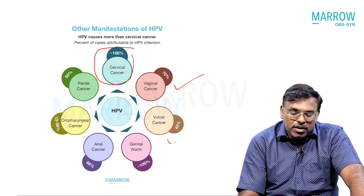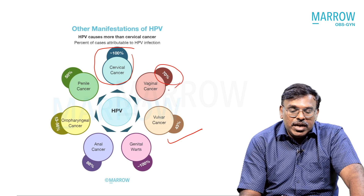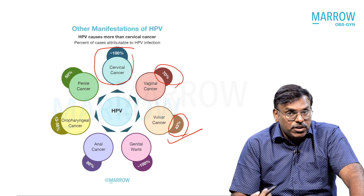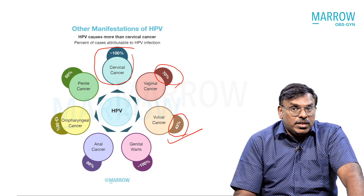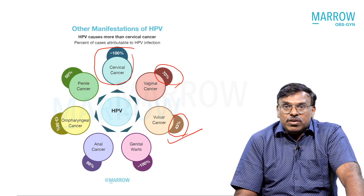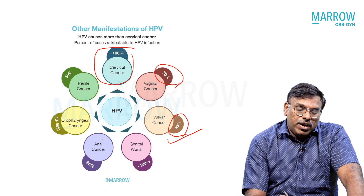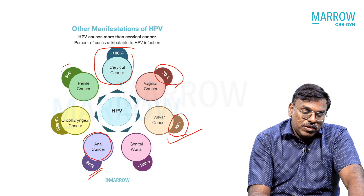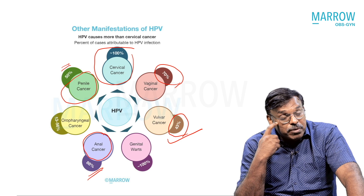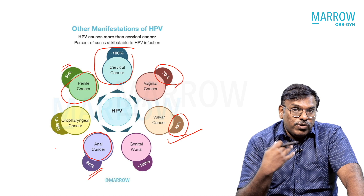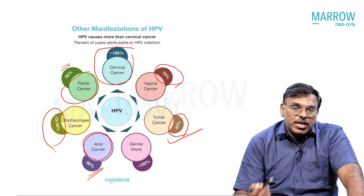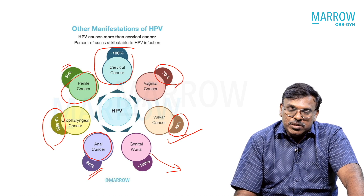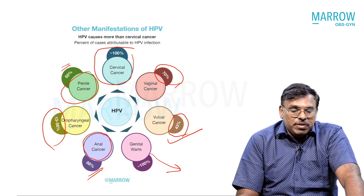Beyond the cervix, HPV also causes other gynecological cancers — around 70 percent of vaginal cancers are due to HPV. Vulval cancers have many other non-HPV causes, but still 43 percent are due to HPV. For anal cancers, around 80 percent are HPV-related due to the mucocutaneous junction. About 50 percent of penile cancers are caused by HPV. For head and neck cancers, especially oropharyngeal cancers, a wide range of 13 to 58 percent can be caused by HPV. Almost all benign genital warts are also due to HPV.